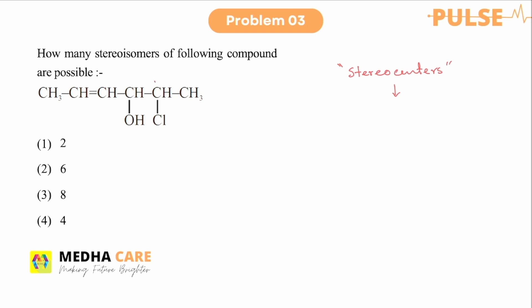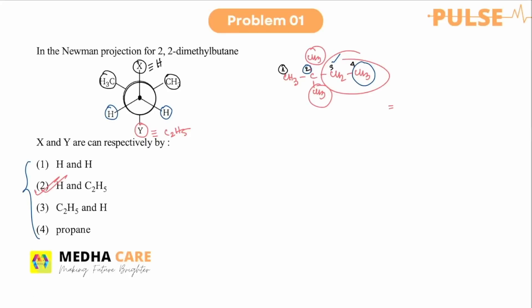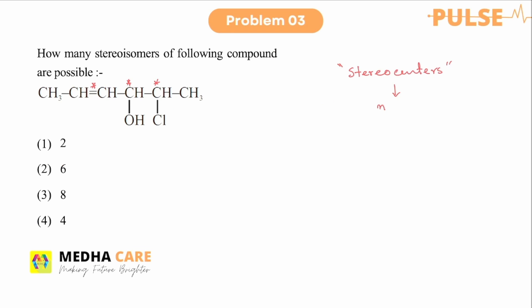In this question we have three stereo centers — this double bond will also be considered as a stereo center. The total number of stereo centers we are getting is three. So the number of stereoisomers will be 2 to the power 3, that is eight. The answer will be eight.